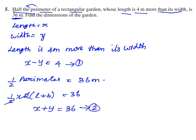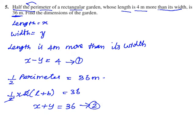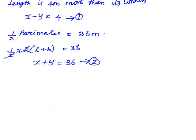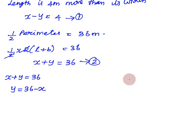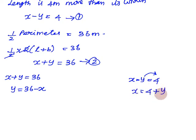We will solve these using the graphical method. For Equation 2, x plus y equals 36, we get y equals 36 minus x. For Equation 1, x minus y equals 4, we rearrange to get y equals x minus 4.